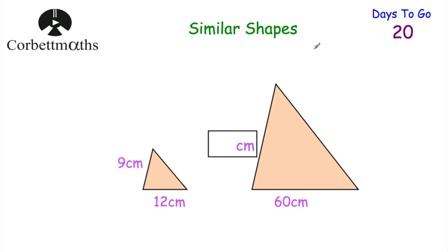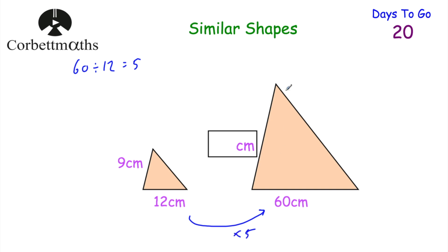Our next question has two mathematically similar triangles. Can you find the length of a missing side? The base of the first triangle is 12 centimetres and the base of the second is 60 centimetres. 60 divided by 12 equals 5, so the scale factor of enlargement is 5. Taking the side of 9 centimetres and multiplying by 5 gives 45 centimetres. Well done if you got that.